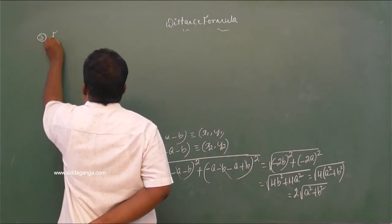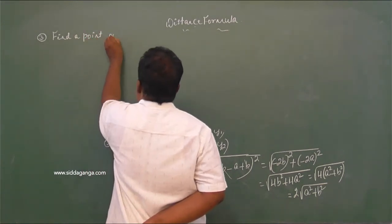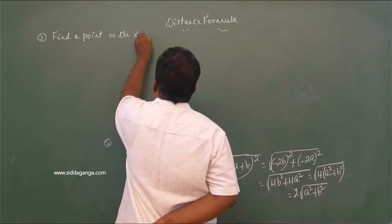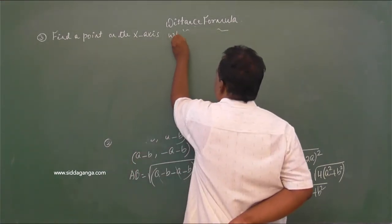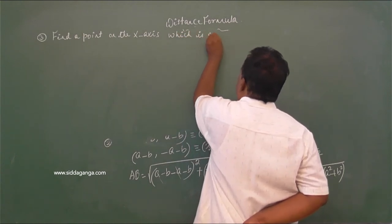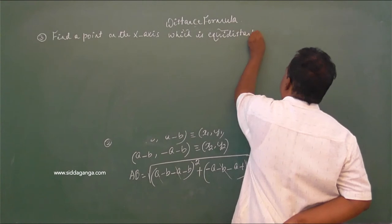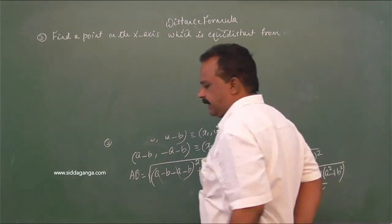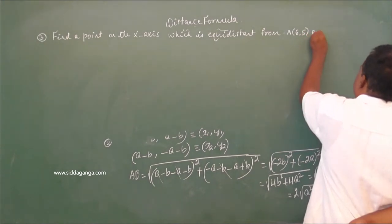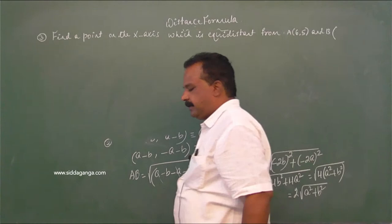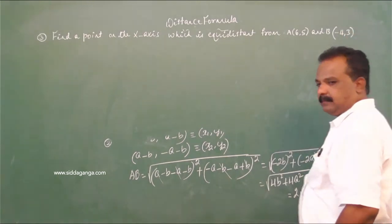Next problem: Find a point on the x-axis which is equidistant from A(6, 5) and B(−4, 3).